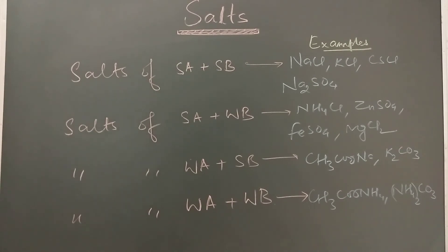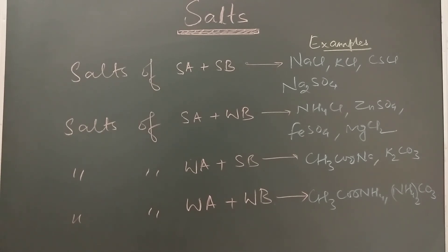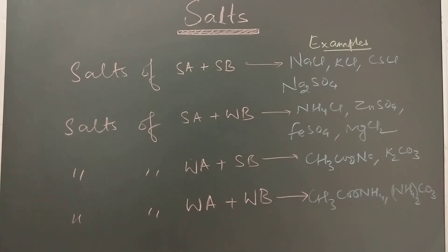Salts of weak acid and weak base — examples are ammonium acetate and ammonium carbonate. Both cation and anion are derived from a weak base and a weak acid respectively. Acetic acid is a weak acid and ammonium hydroxide is a weak base. Similarly, carbonate comes from carbonic acid which is a weak acid, and the ammonium ion comes from weak base ammonium hydroxide. The pH of such salts depends on the relative strength of the weak acid and weak base. You will read this concept in hydrolysis of salt.